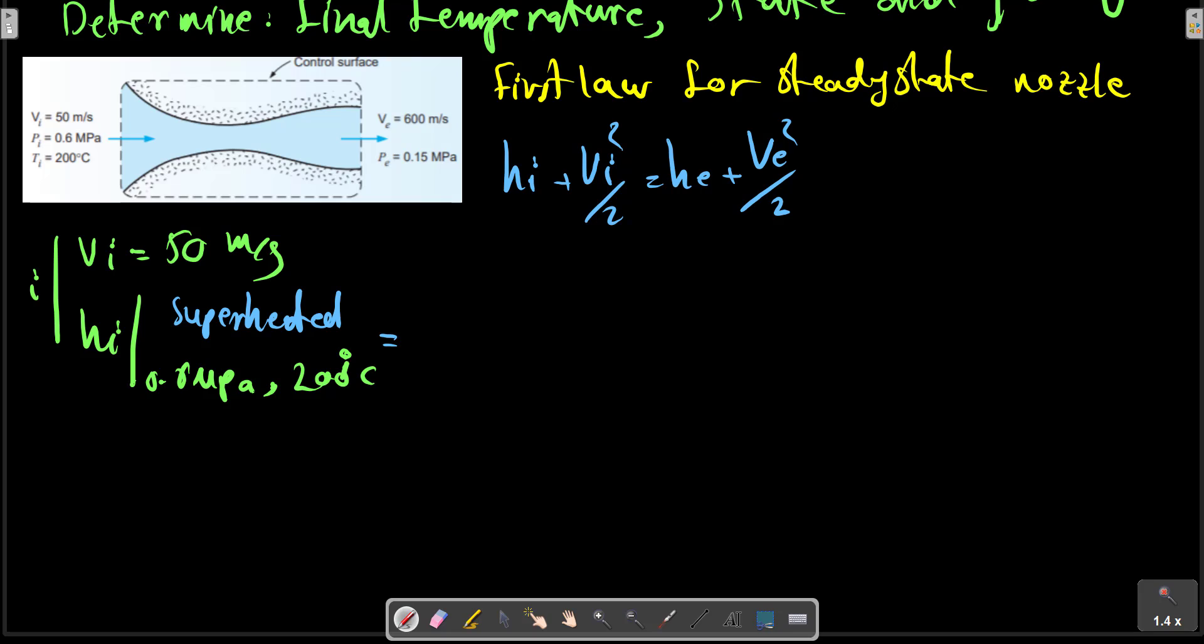Using the tables for the superheated table at pressure 600 kilopascals and 200°C, we have h_i equals to 2850 kJ/kg. We can check with your table, with your book.